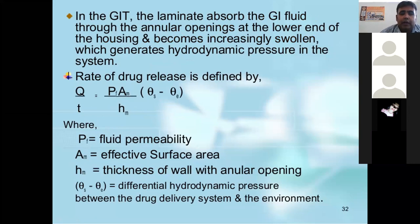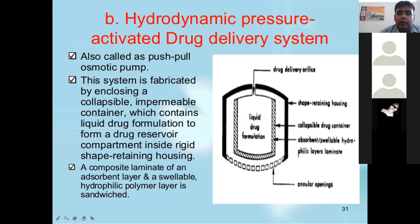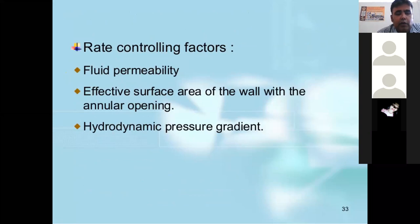It is a very simple concept. When we put this system into the body, GIT fluid enters through the annular openings, the membrane swells, the area decreases and collapses, and because of that, drug release starts. The rate of drug release is defined by the equation where PF is the fluid permeability, K is the effective surface area, H is the thickness of the wall with annular opening, and Eta is the differential hydrodynamic pressure between the drug delivery system and the environment. Rate-controlling factors are fluid permeability, effective surface area of the wall with annular opening, and hydrodynamic pressure gradient.